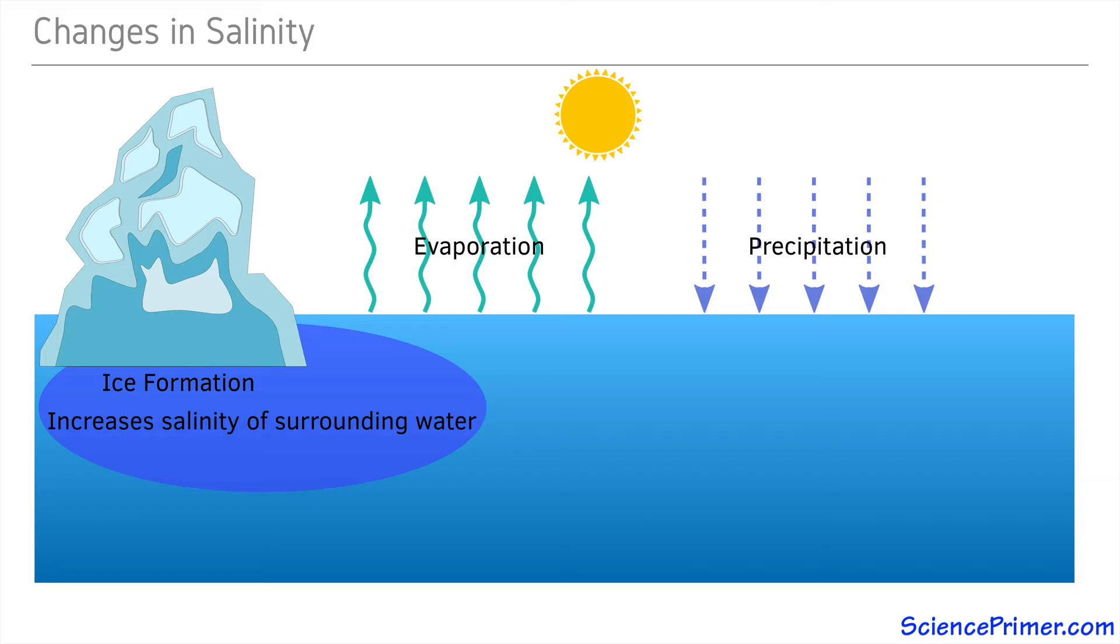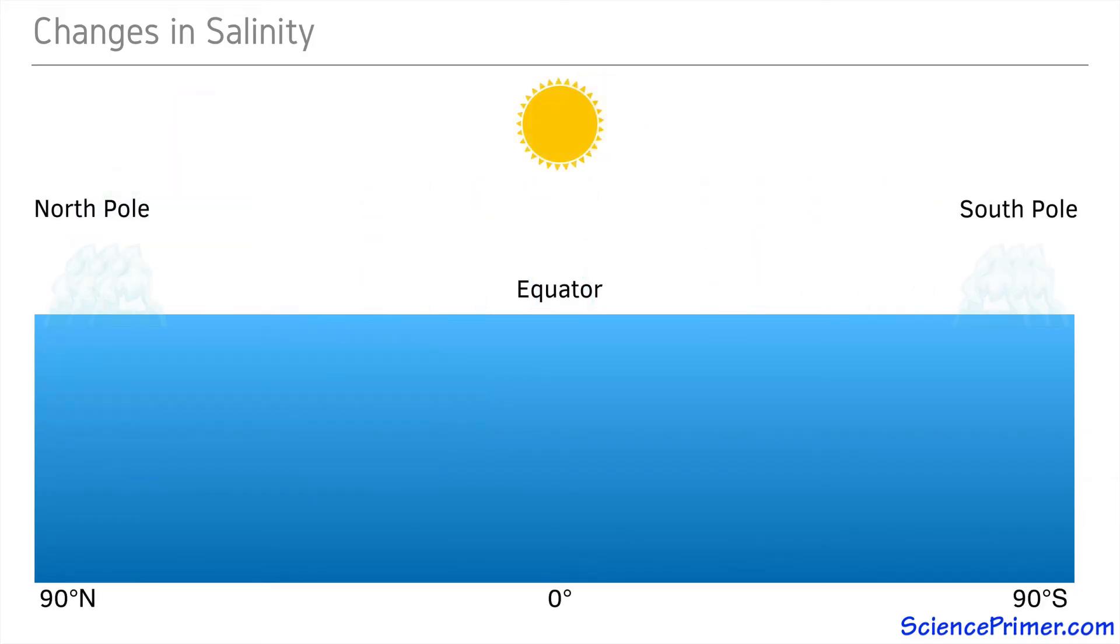So in regions near the poles where significant ice formation occurs, the exclusion of salt, which ends up in the surrounding water, leaves that water cold enough and salty enough to be denser than the surrounding water, allowing it to sink.